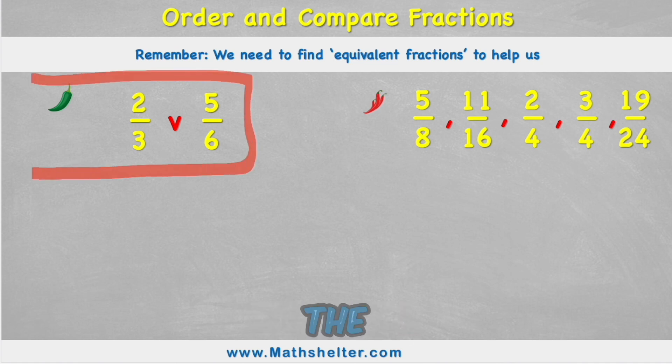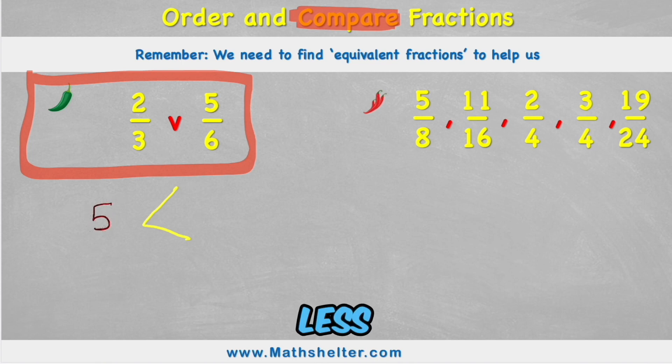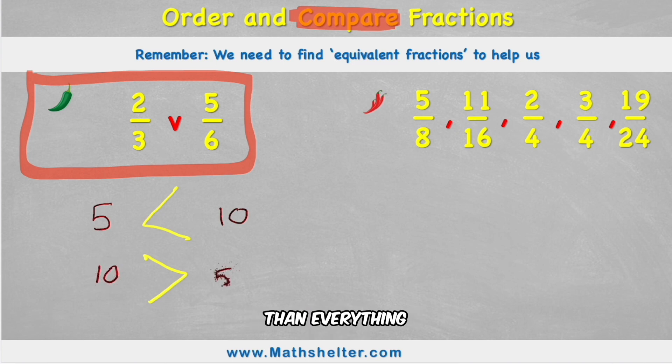Okay, so first, if we look at this first example, the green chili challenge, we can see we have two thirds versus five sixths. So for this exercise, we're going to be comparing them. Now, when we compare anything, we have three symbols that represent three things. We have the less than symbol, which means that everything on this left hand side is less than everything on the right hand side. We have the more than symbol, which is obviously the opposite. Everything on the left will be more than everything on the right. And then we have finally the equal sign, which means that everything on the left is actually equal to everything on the right.